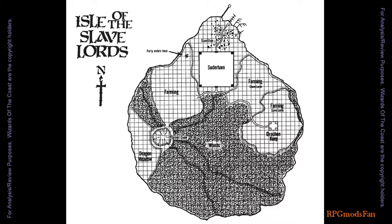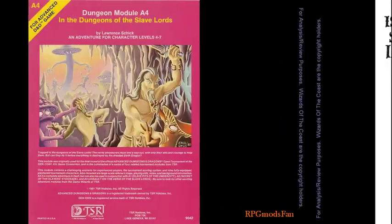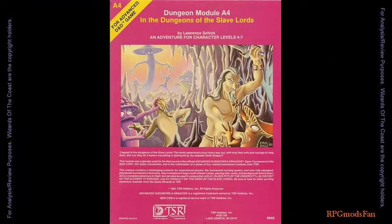The area between the town and the docks are mostly slum dwellings. There are also farmlands being worked by slaves. This module details Sunderham, but not the rest of the island. For details on the rest of this mysterious isle, the Dungeon Master will need to refer to the A4 module, In the Dungeons of the Slave Lords.